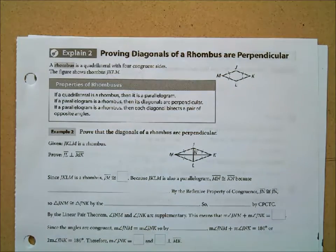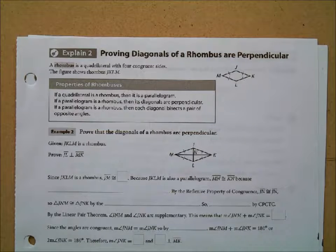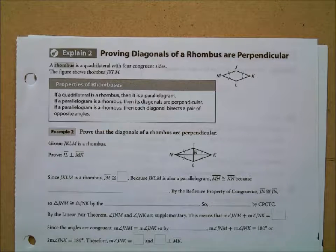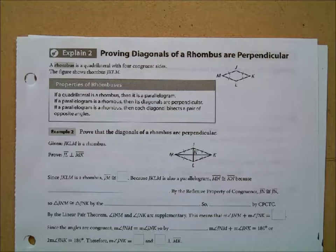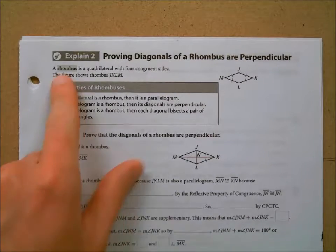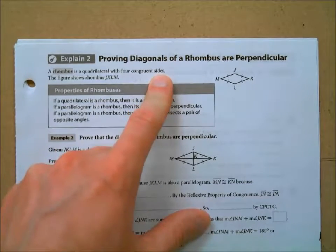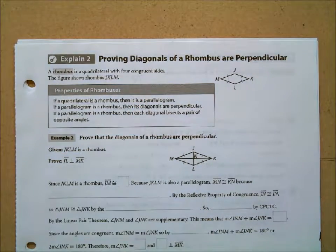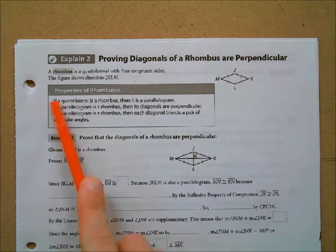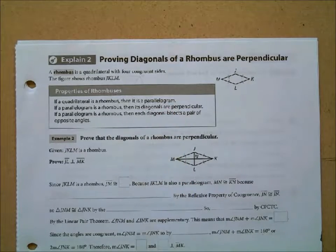That's rectangles. What makes a rectangle a rectangle? It's a parallelogram, which means it inherits all the properties of parallelograms: opposite sides congruent, opposite angles congruent, diagonals bisect each other. But additionally with the rectangle, all the angles are right angles — that's the definition — and the diagonals are congruent in length. Now we're moving on to rhombus. A rhombus is a quadrilateral with four congruent sides. Just like a rectangle is an equiangular quadrilateral, a rhombus is an equilateral quadrilateral.